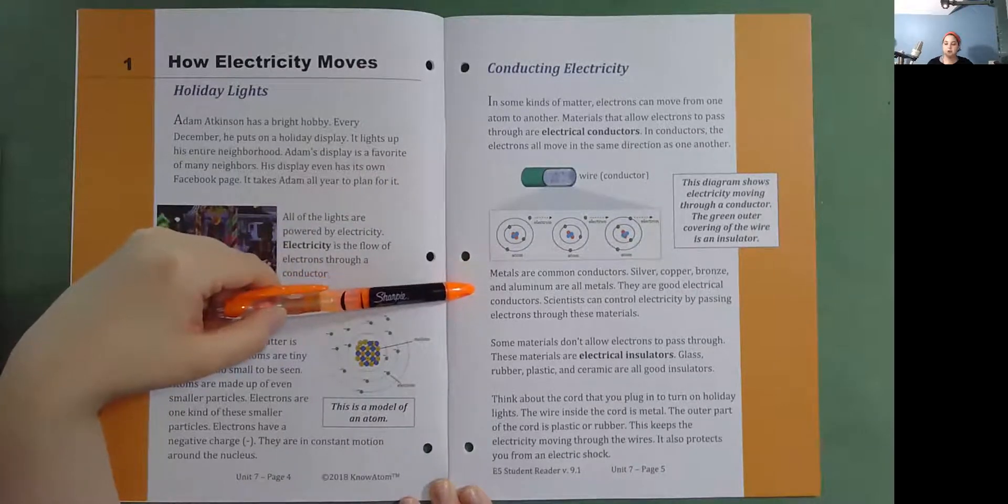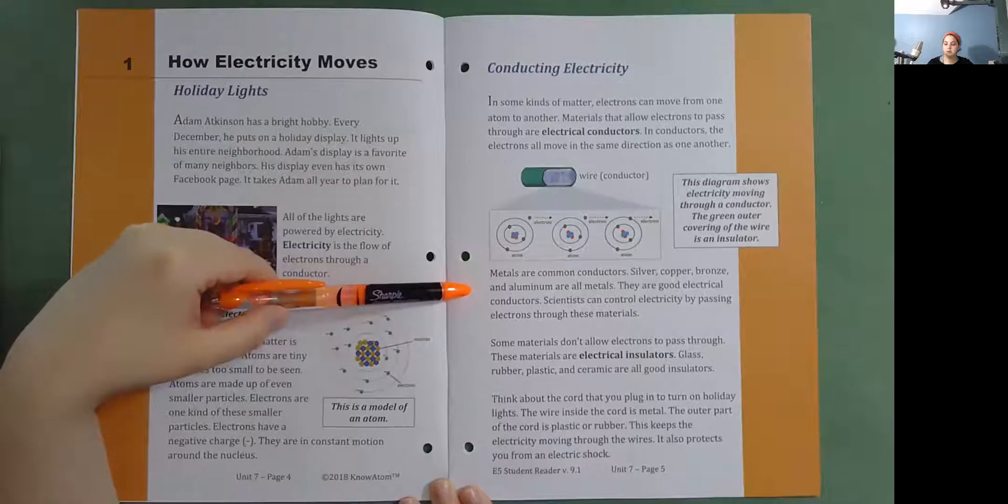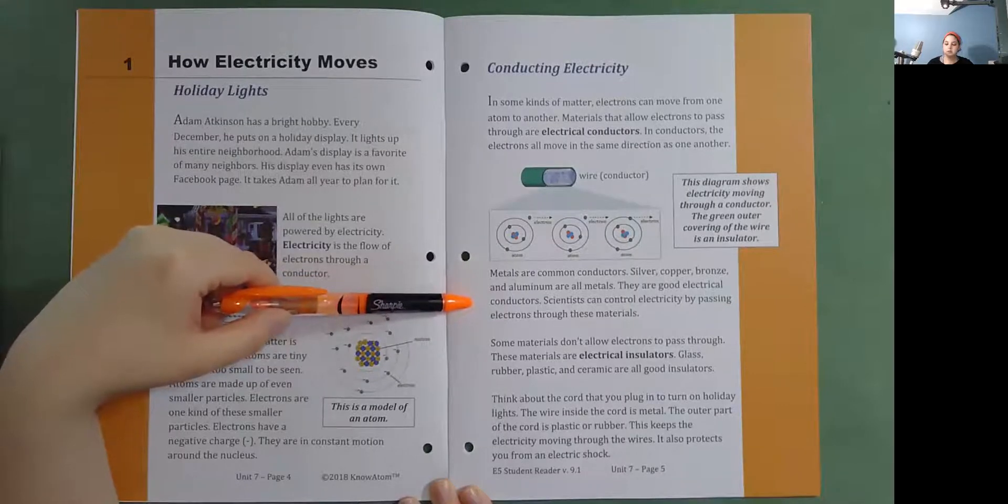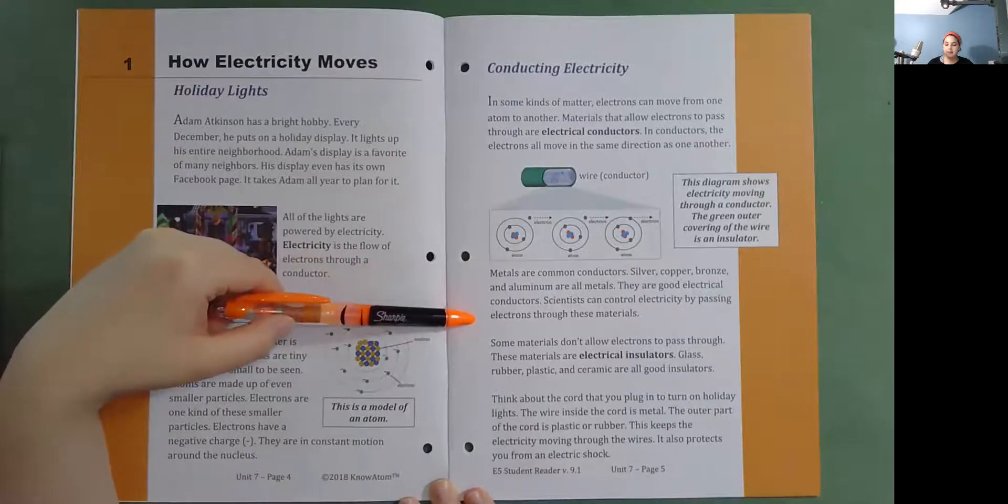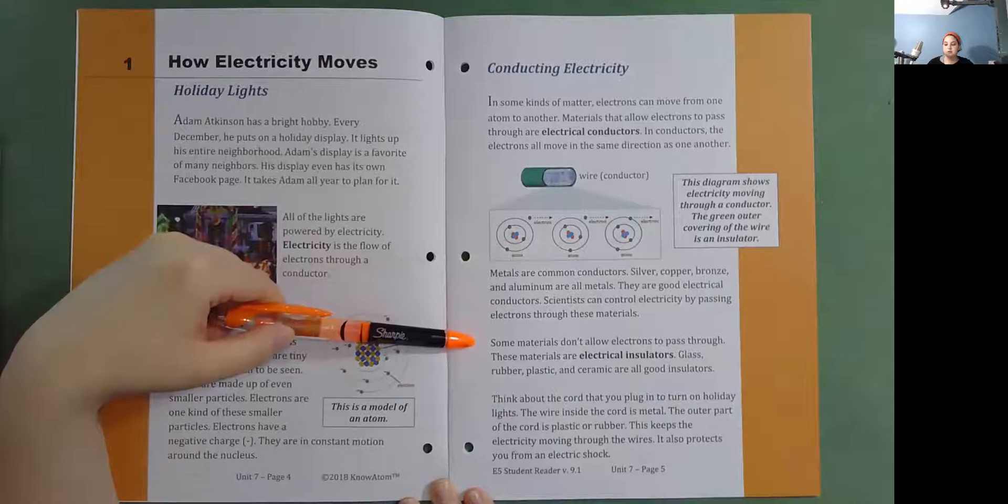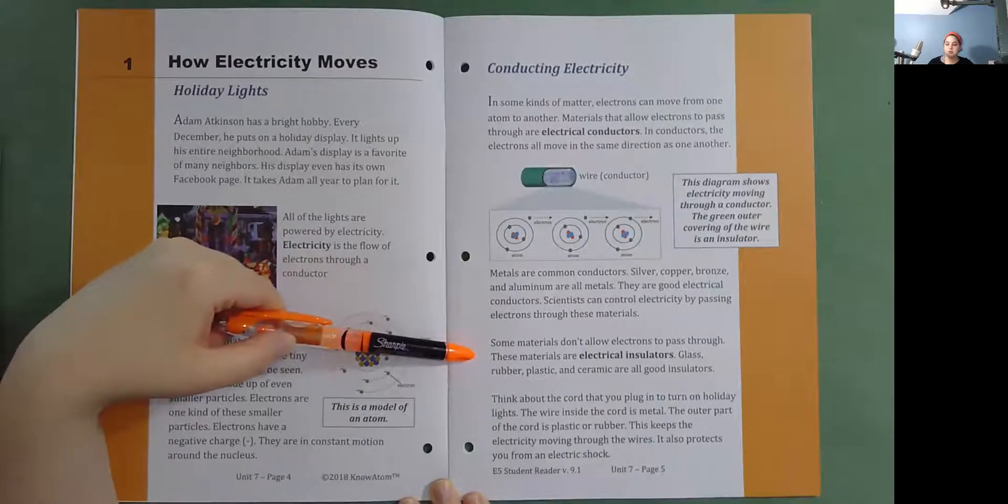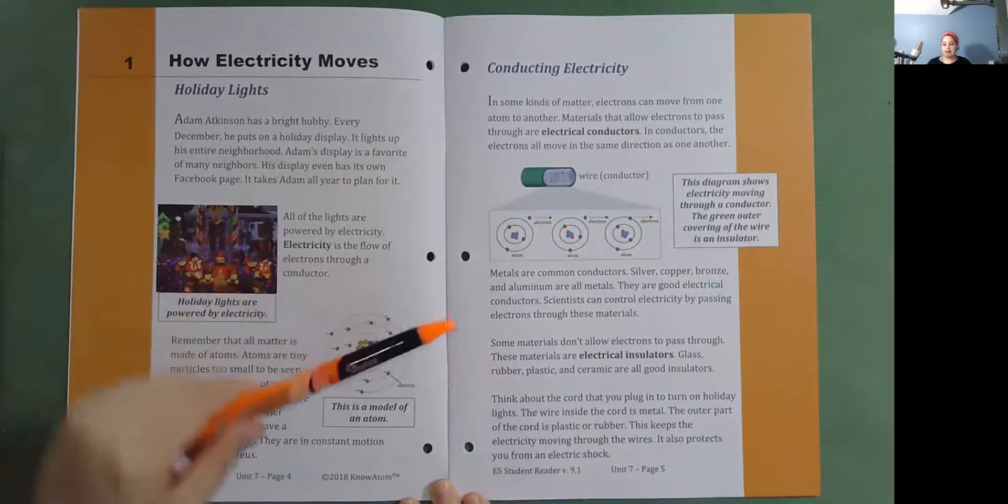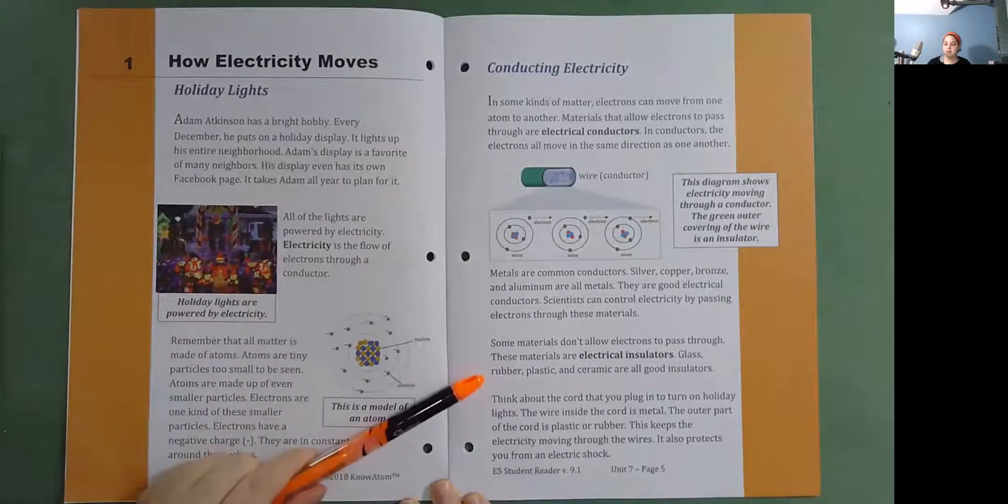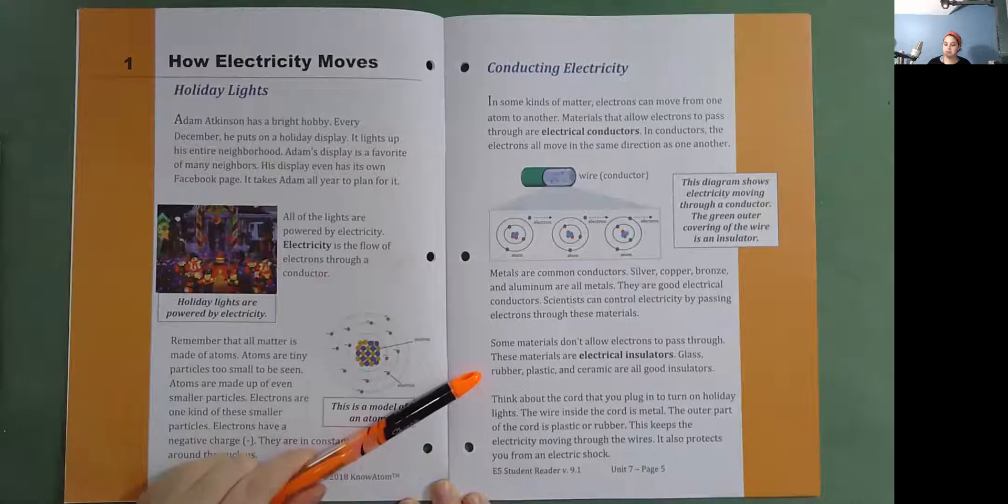Silver, copper, bronze, and aluminum are all metals. They are good electrical conductors. Scientists can control electricity by passing electrons through these materials. Some materials don't allow electrons to pass through. These materials are electrical insulators. Glass, rubber, plastic, and ceramic are all good insulators.